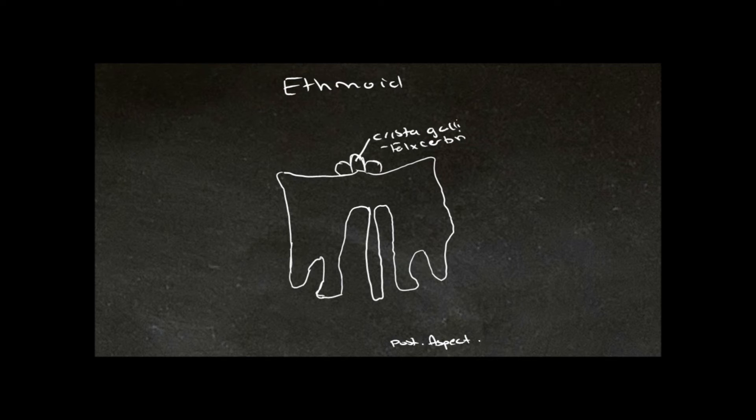Down here, this is what is referred to as the perpendicular plate. So we know that this is superior, and this is inferior.